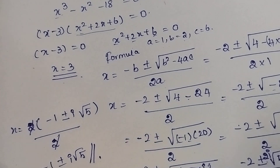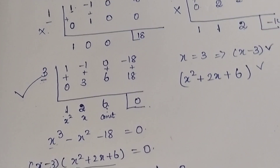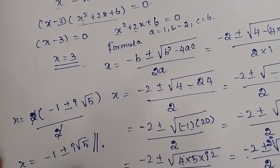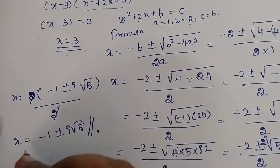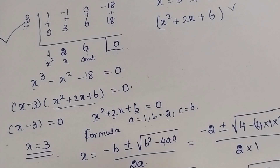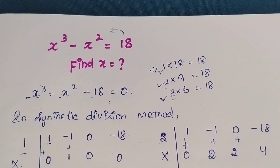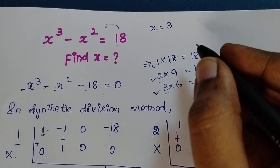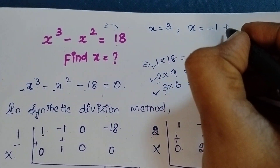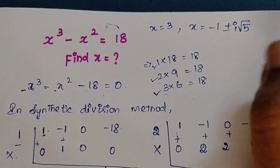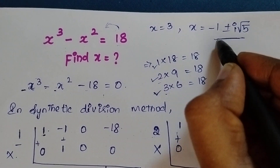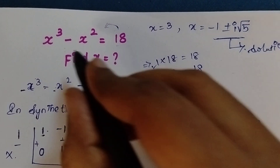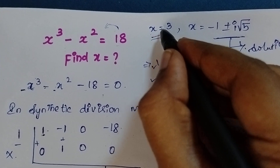So the other factors of this equation are x equals minus 1 plus or minus i√5. This is in complex number form. Since these are complex numbers, we cannot consider them as solutions for this equation. So we take x equals 3 as the answer.